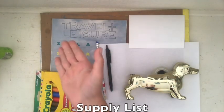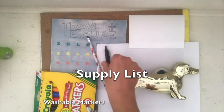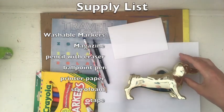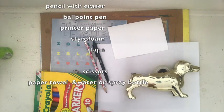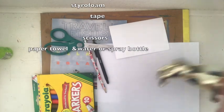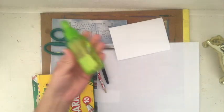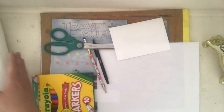The materials you will need for the print are: markers, washable markers, a magazine, a pencil, pen, printer paper, the styrofoam you cut, tape, scissors, and either paper towels that you'll dip in water or a bottle that can spray water.